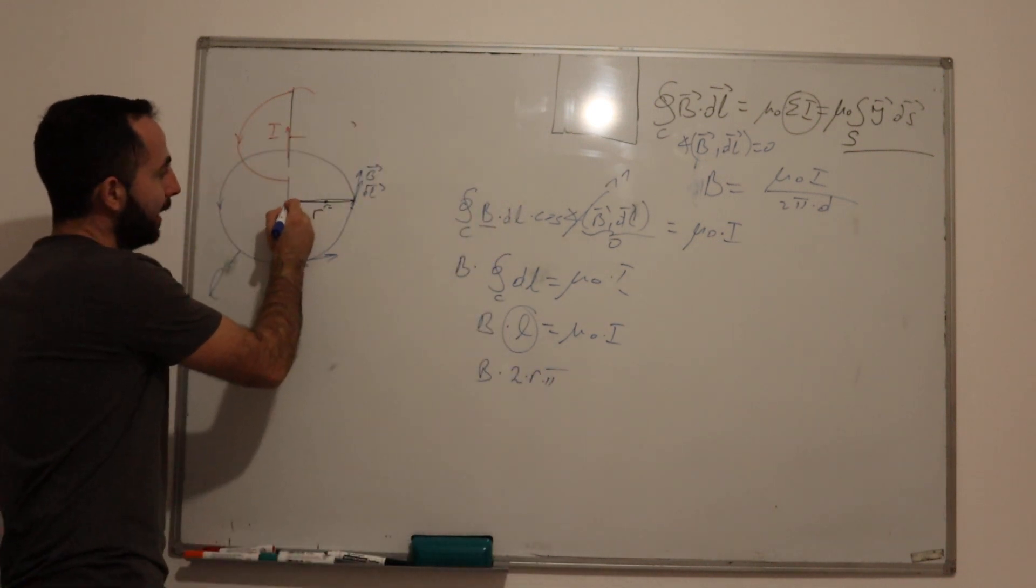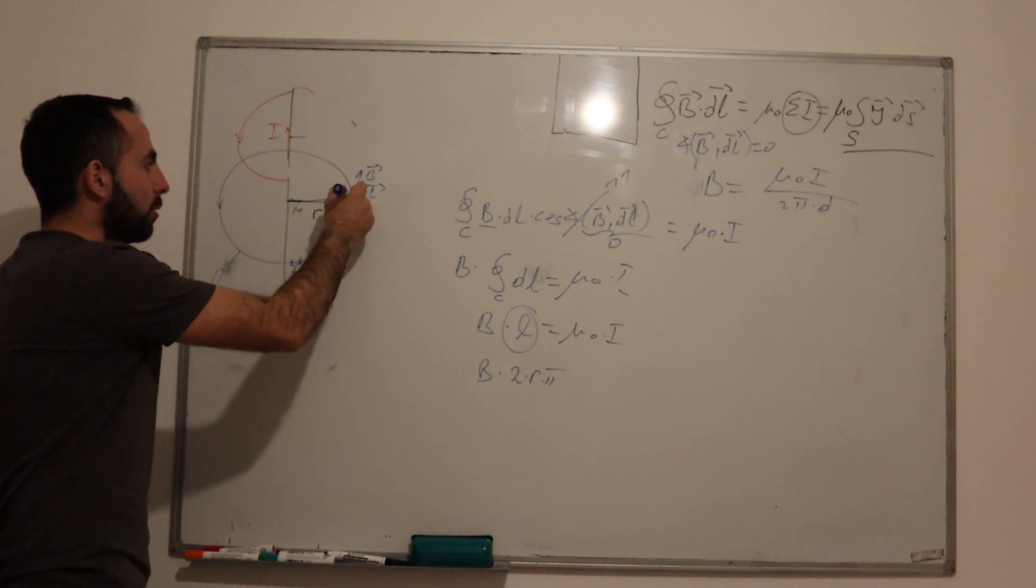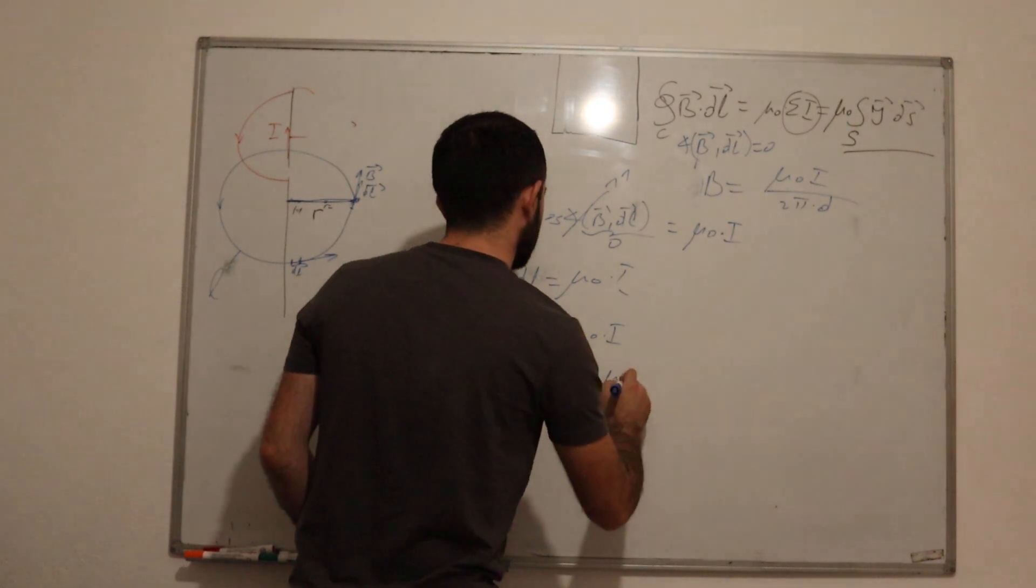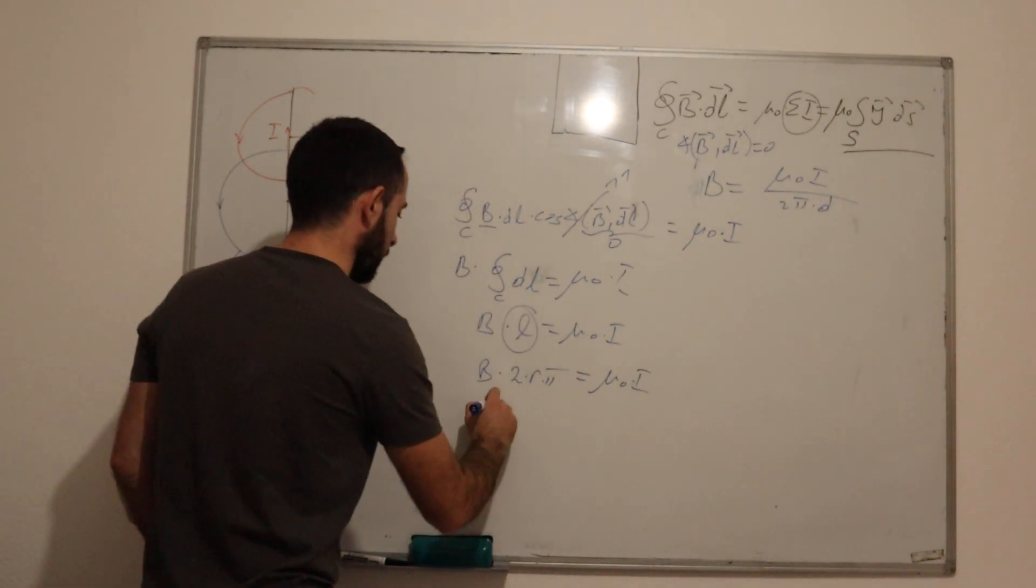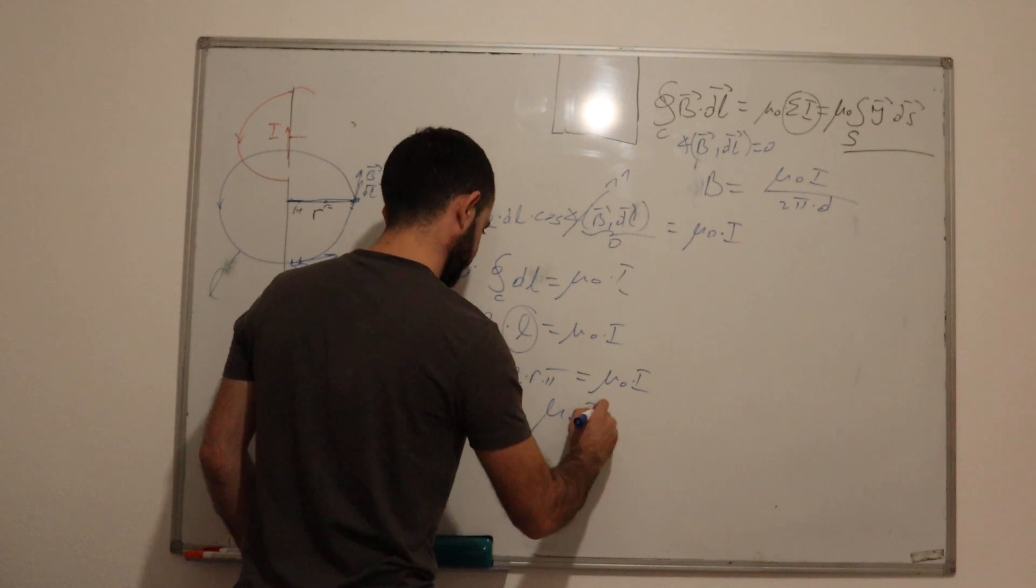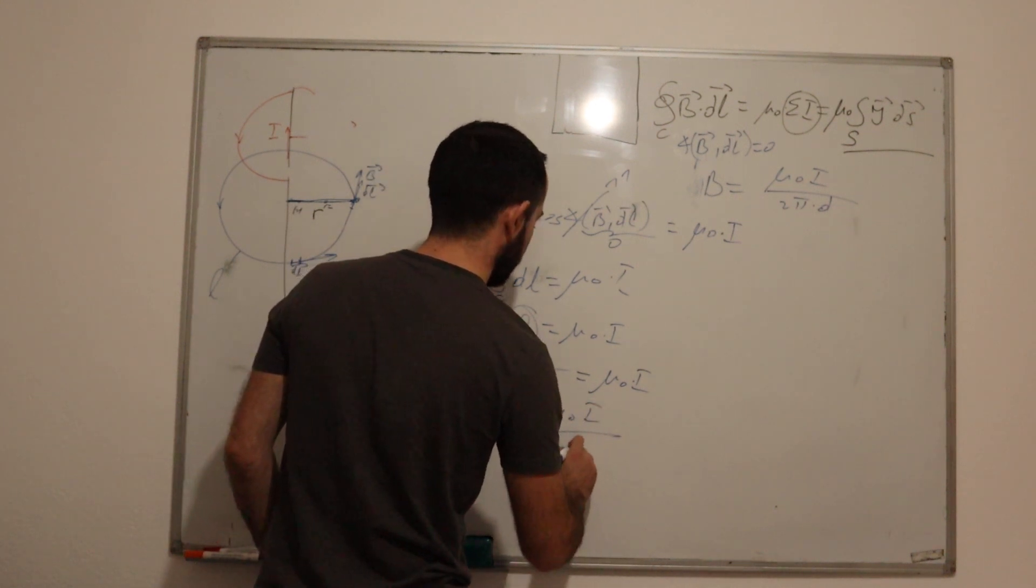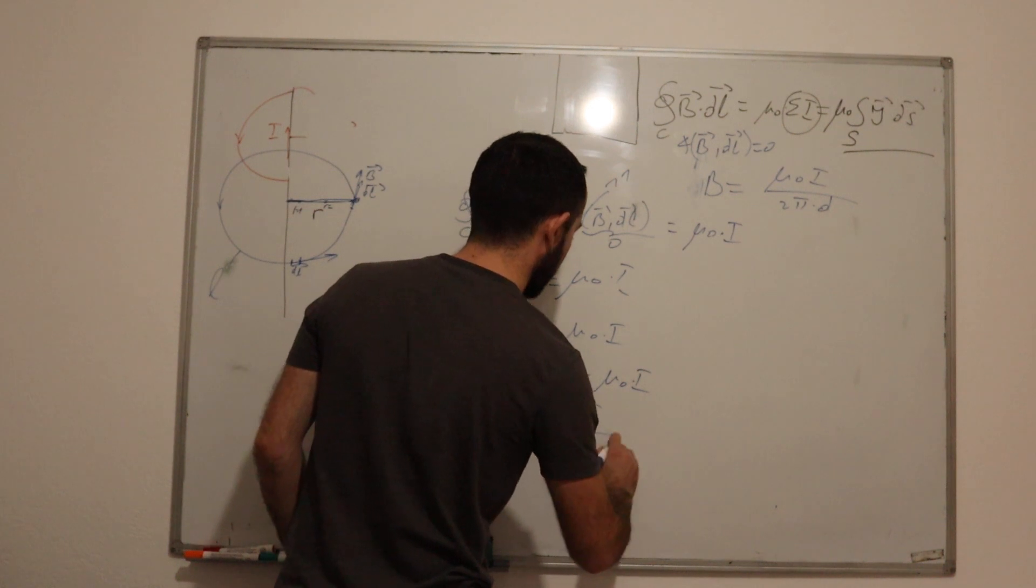In our case, the radius is the distance where we need to calculate our magnetic field. And this is equal to μ₀ times I, which means that our magnetic flux density B equals μ₀I/2πR.